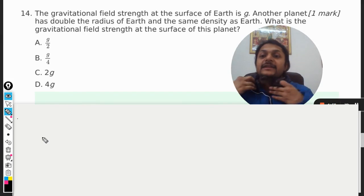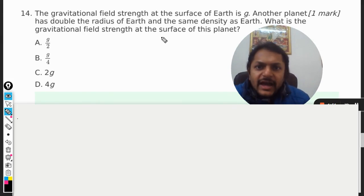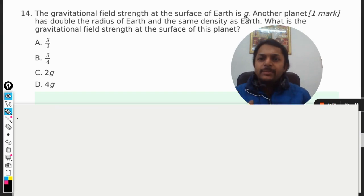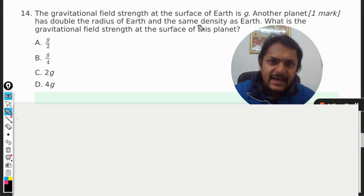Okay dear students, let us see what is there in this question. The gravitational field strength at the surface of the earth is g. Another planet has double the radius of the earth and same density as that of earth. What is the gravitational field strength at the surface of that planet?